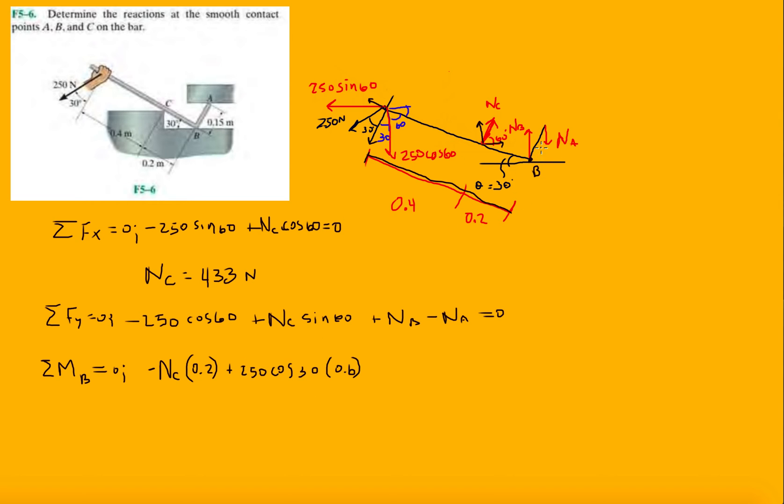And then last but not least is the N_A. So N_A has to be multiplied by this little tiny distance here of 0.15. Let's see, I didn't even consider the angles here. Let's see. This is 30, so that's going to be 60. So if you do the geometry, that should be 60 in there, so this should be 60. So then last but not least, we have N_A.